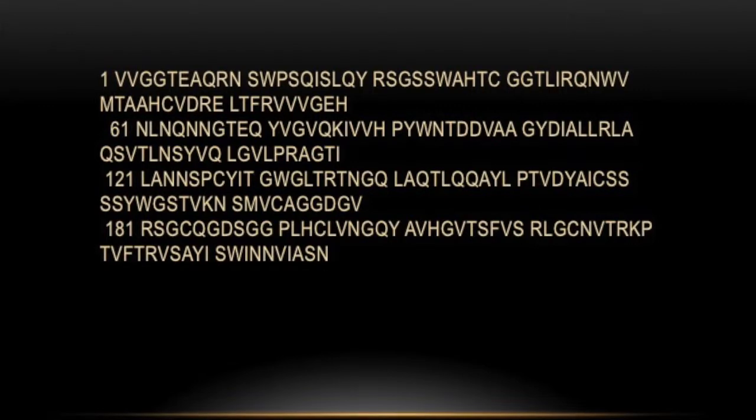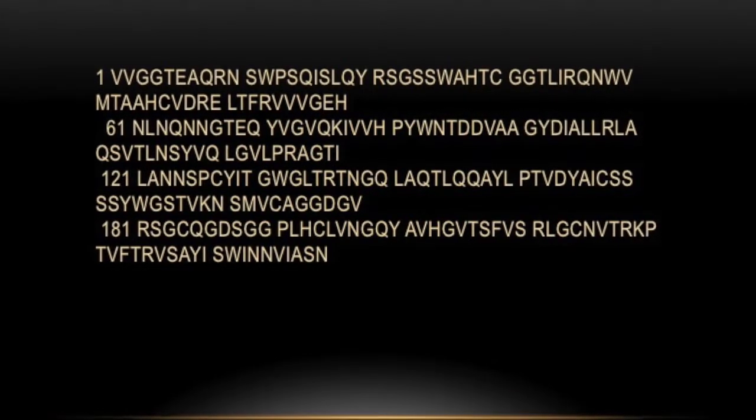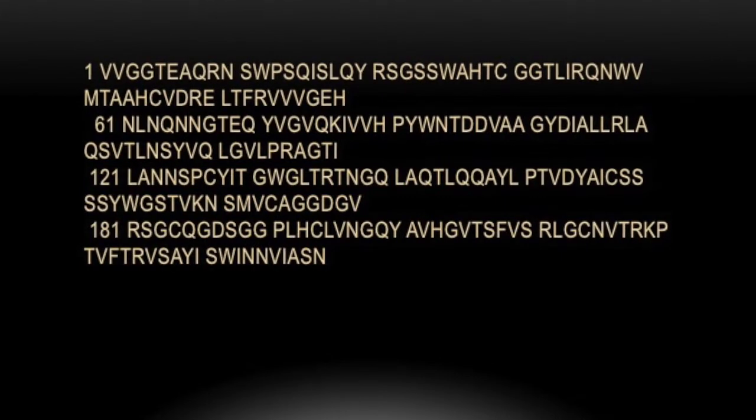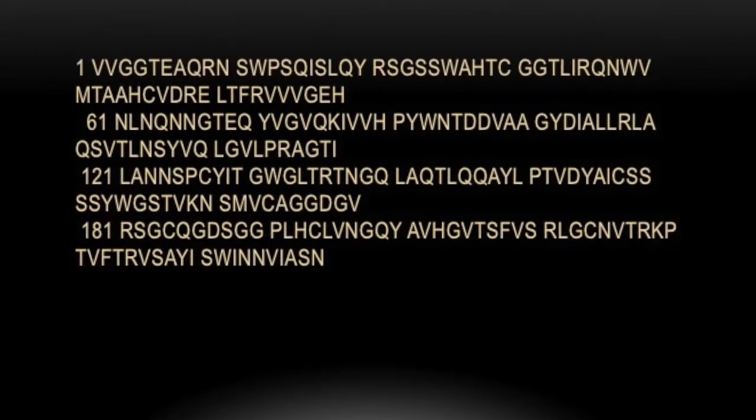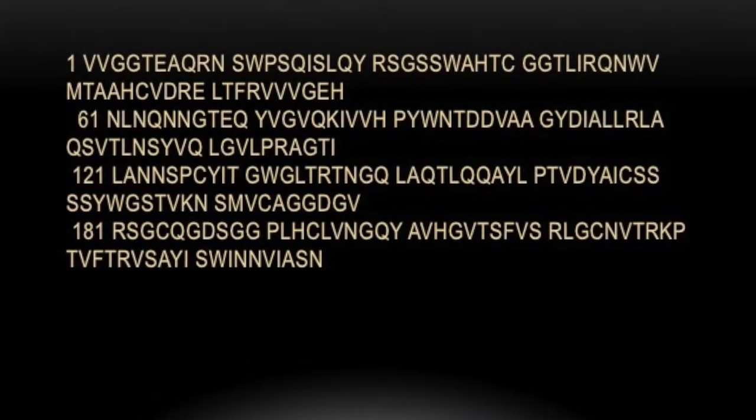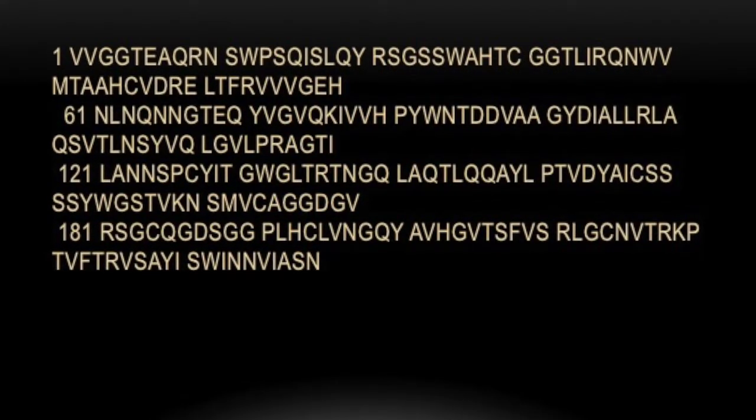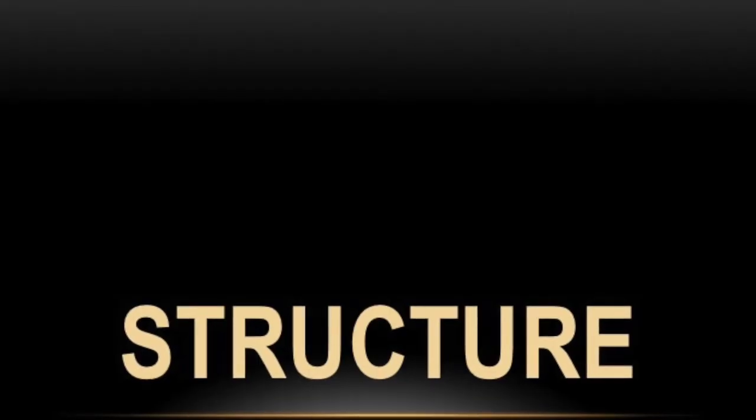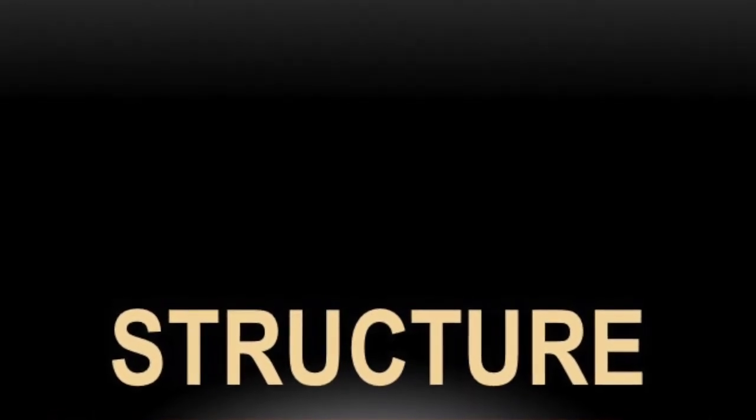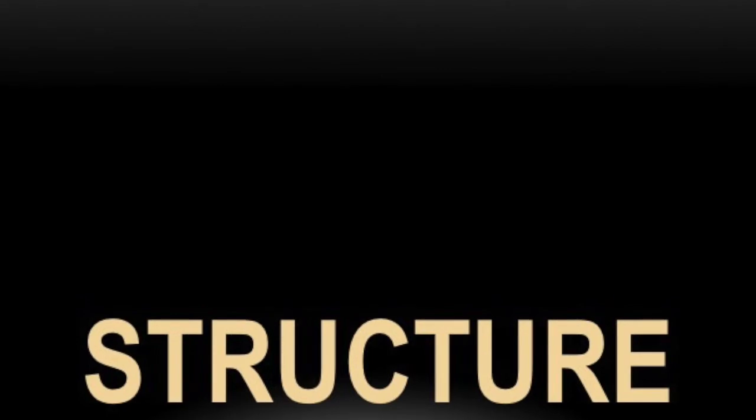The primary structure of elastase-1 includes the following amino acid residues: valine, valine, glycine, glycine, threonine, glutamic acid, alanine, glutamine. I'm just kidding. I won't do that to you. That would take forever. Stephanie is here with a better description for the structure of elastase.